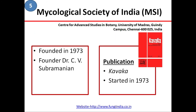Then comes Mycological Society of India, based in University of Madras. This society was founded in 1973 and the founder was Dr. C.V. Subramanian. This society publishes a journal called Kavaka. The word Kavaka is a Sanskrit word which means mushroom or fungi, and the publication started in 1973.